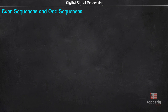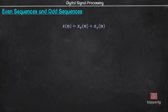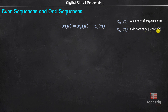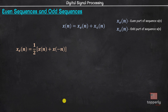Purely odd or purely even sequences are rare in nature; however, any sequence can be expressed as a sum of its even part and its odd part. We can write x(n) = x_e(n) + x_o(n), where x_e(n) is the even part and x_o(n) is the odd part. Here x_e(n) is obtained by the equation x_e(n) = (1/2)[x(n) + x(-n)], and x_o(n) is obtained by x_o(n) = (1/2)[x(n) - x(-n)].